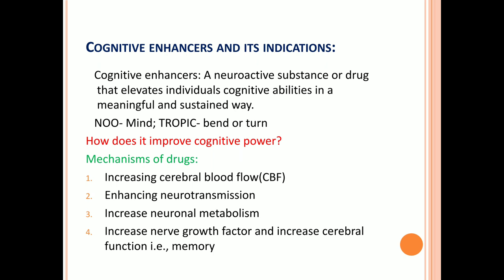The cerebrum is the major part of the brain, consisting of two parts: the left hemisphere and the right hemisphere. The second mechanism is enhancing neurotransmission — meaning the neurotransmitters responsible for cognitive function and memory should be properly enhanced. Nootropics can achieve this enhancement.